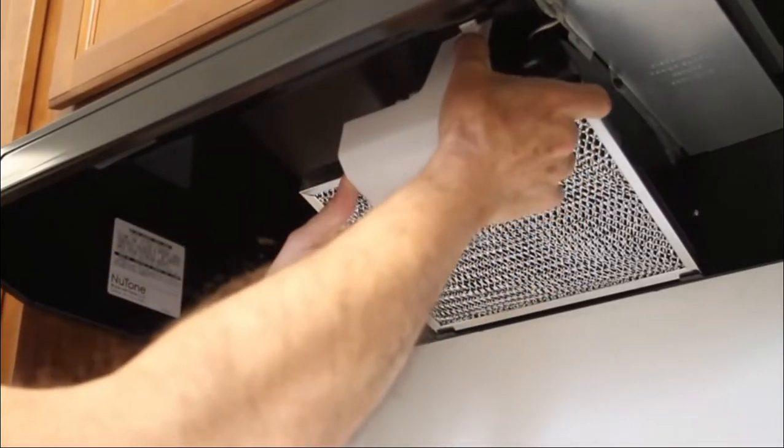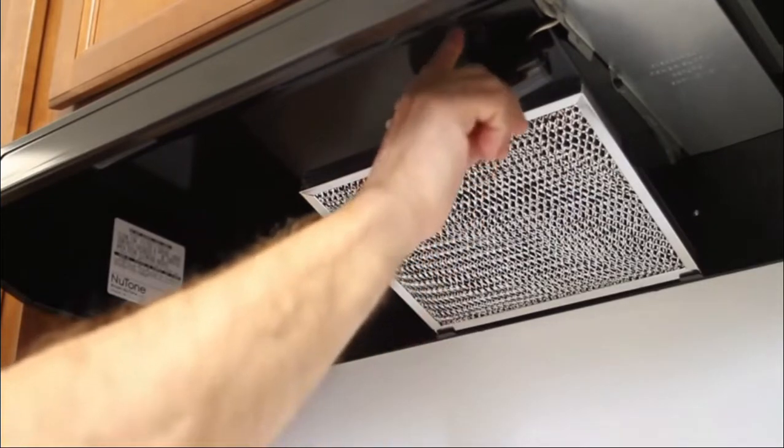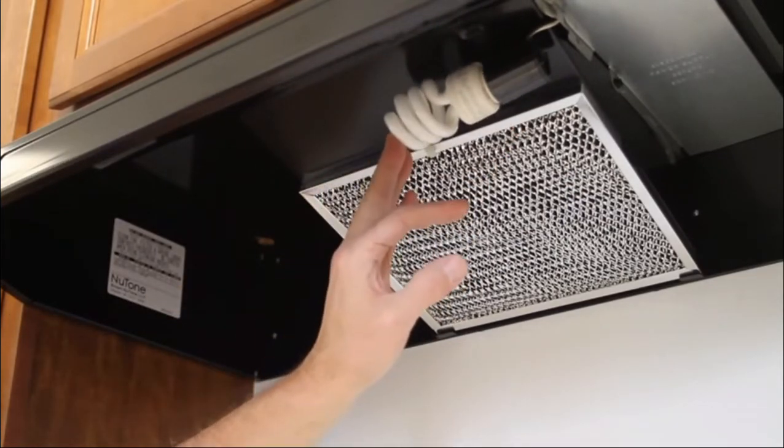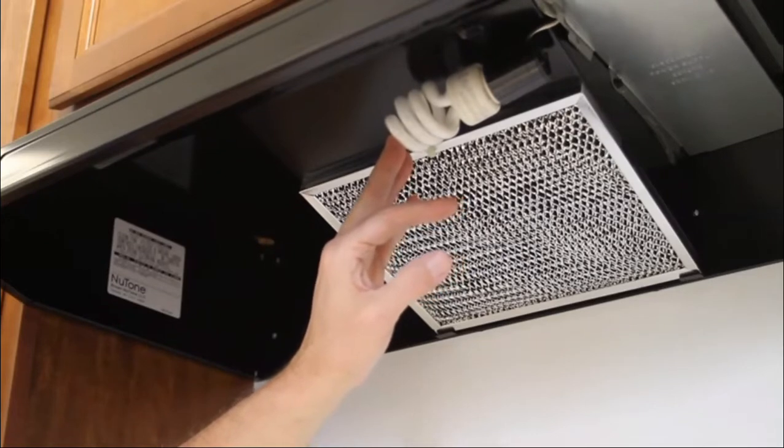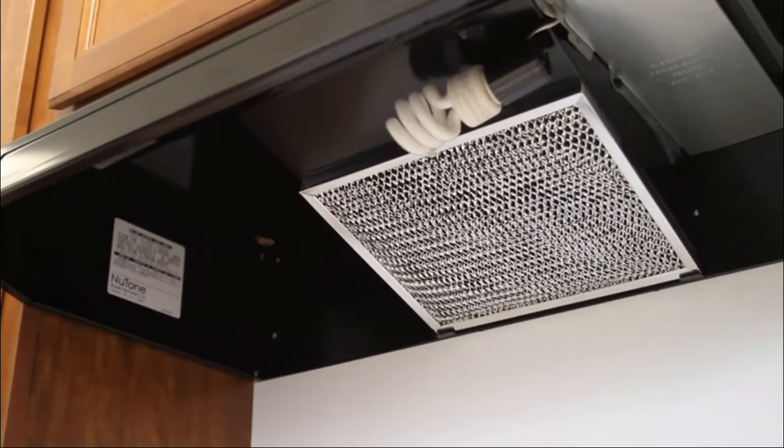To change the light bulb, just squeeze on this cover and take it down. Those tabs fit in little slots. You want to be sure not to put a higher wattage bulb than what comes out, because the heat of a high watt bulb will melt this plastic.